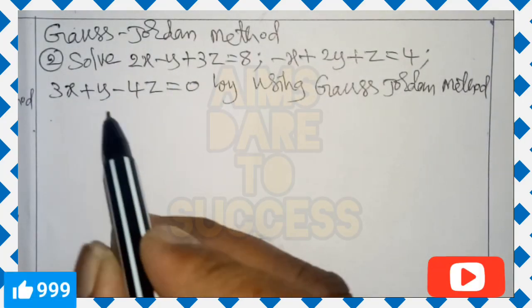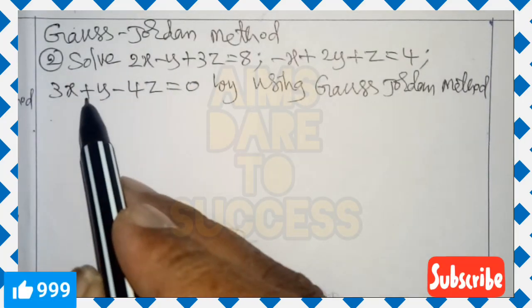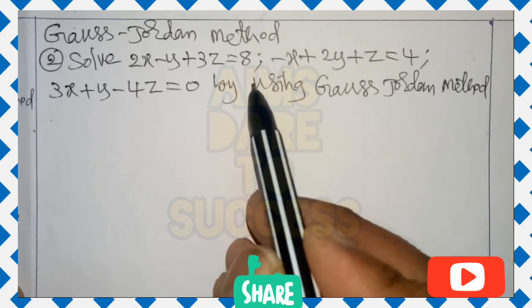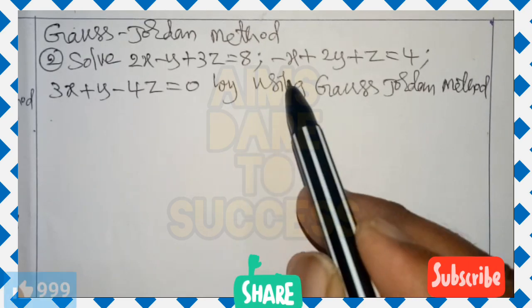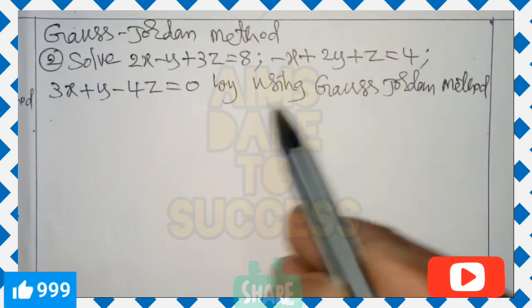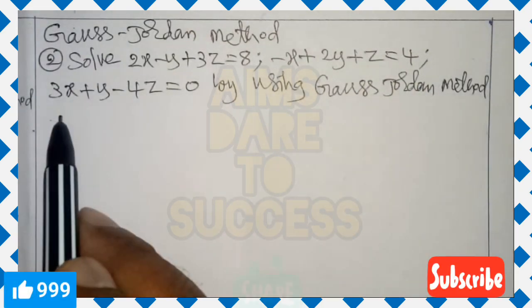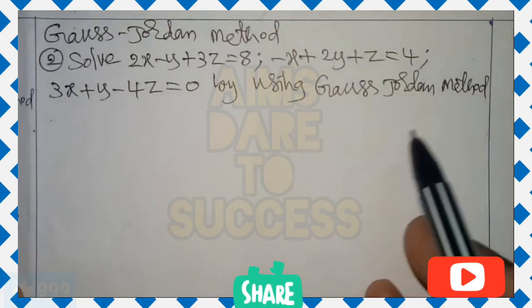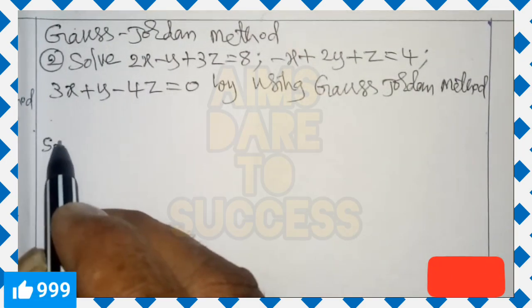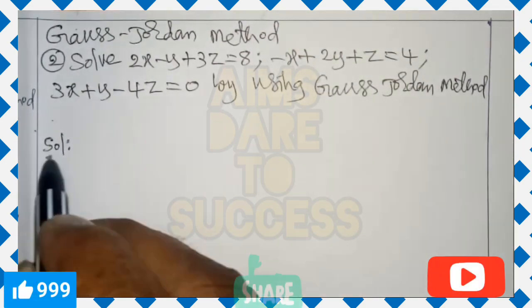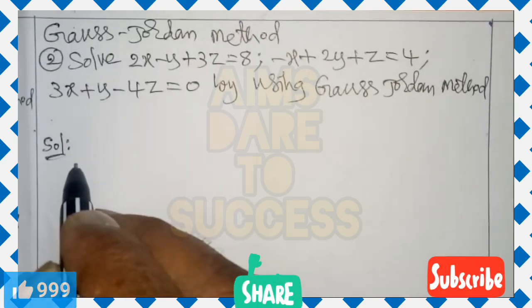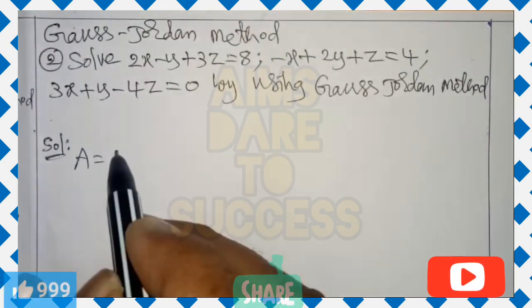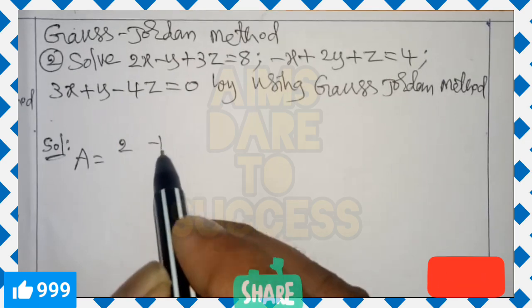Hi, hello, namaste! Welcome back to AIMS Dare to Success YouTube channel. We are discussing the Gauss-Jordan method — a very important method. We will solve: 2x minus y plus 3z equals 8; minus x plus 2y plus z equals 4; 3x plus y minus 4z equals 0, using the Gauss-Jordan method.